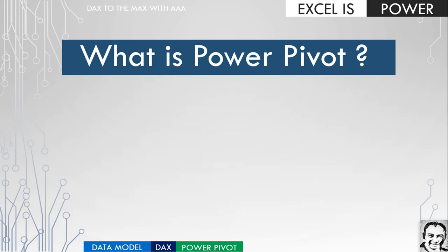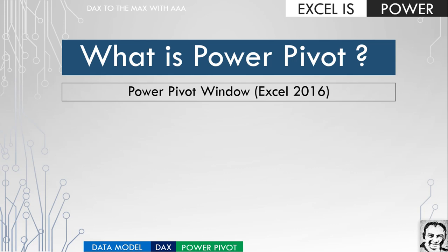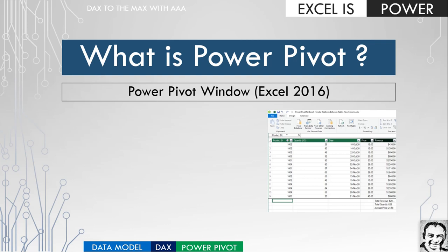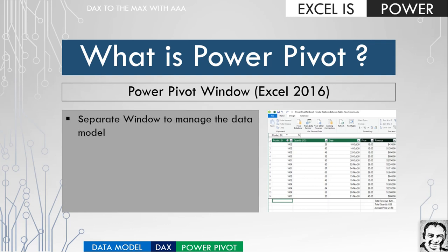There's another component called the Power Pivot Window, available starting Excel 2016. If you have Excel 2010 or 2013, you can still work on the data model and write DAX measures, but you won't have the Power Pivot Window. This window is separate and works in parallel with the normal Excel window — you can toggle between both. Unlike Power Query, you don't have to close it first. It's used to manage your data model, import data from different sources, though the best way to import data is via Power Query, which has its own full series.